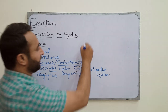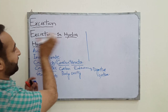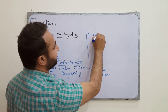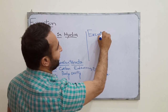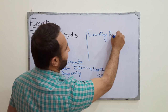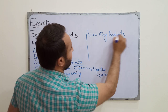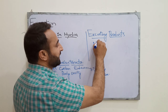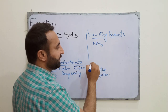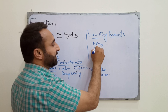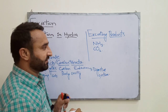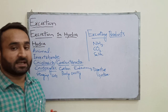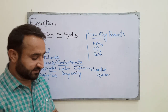Now we discuss the excretory products in hydra. Hydra produces nitrogenous waste mainly in the form of ammonia. It also produces carbon dioxide as an excretory waste, along with other salts as excretory substances.